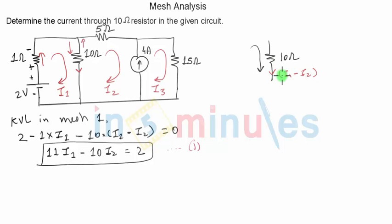Initially we had defined current in downward direction as I1 minus I2. If I want to stick to the same current, that is also possible. Or now because I'm writing equations with respect to I2, I can define current through the same resistance in upward direction. So if I change the direction of the current, then instead of calling it I1 minus I2, the current will become I2 minus I1.